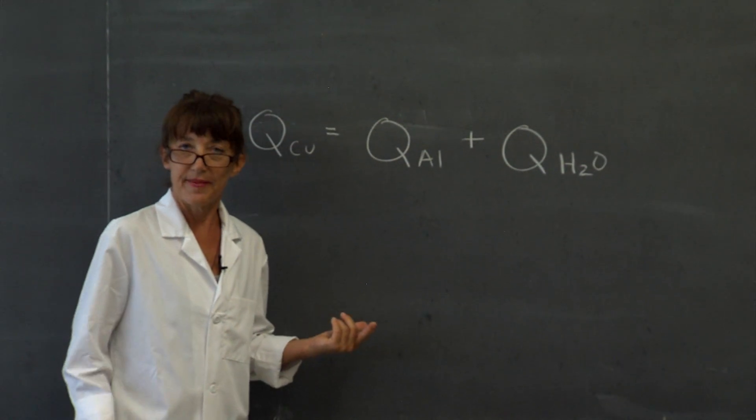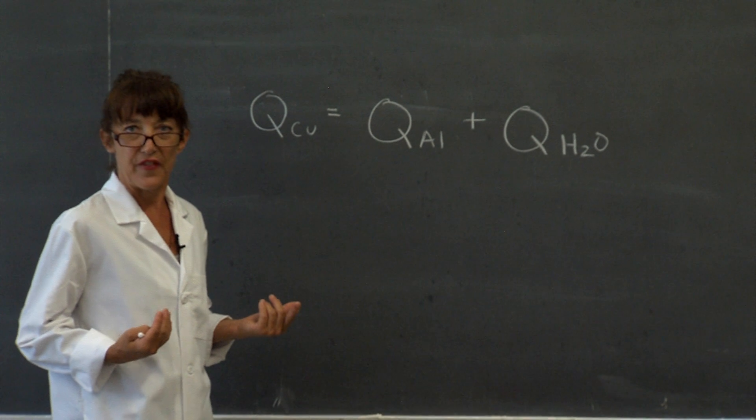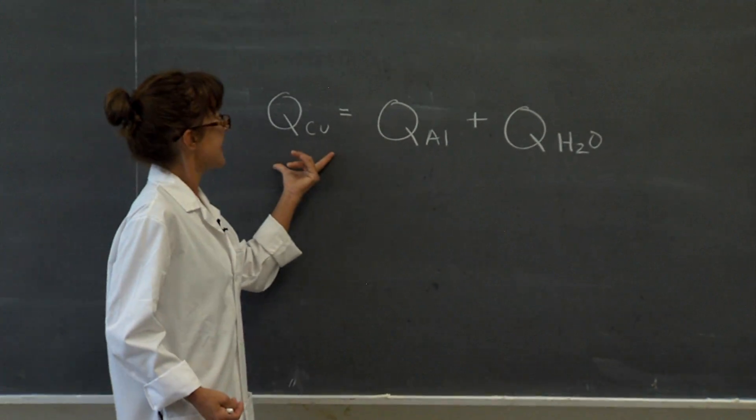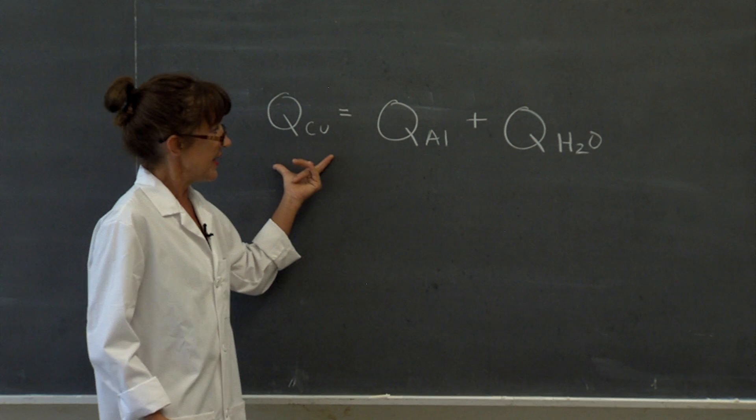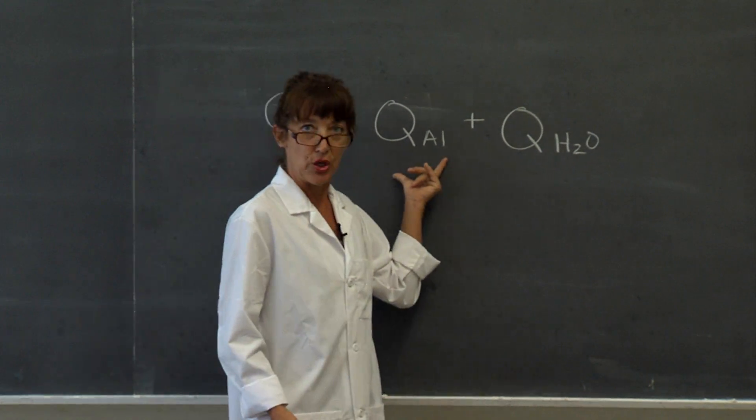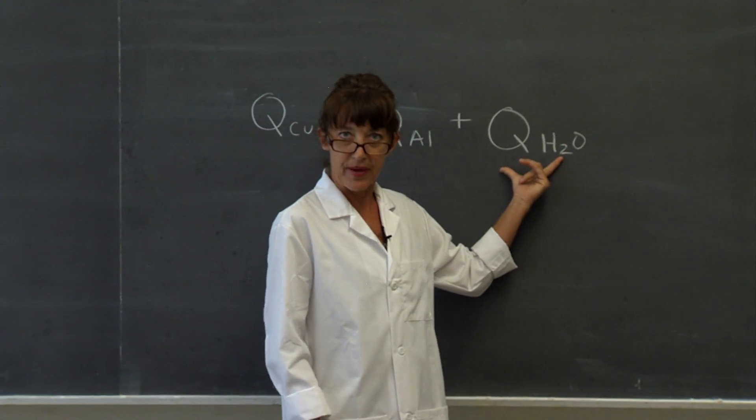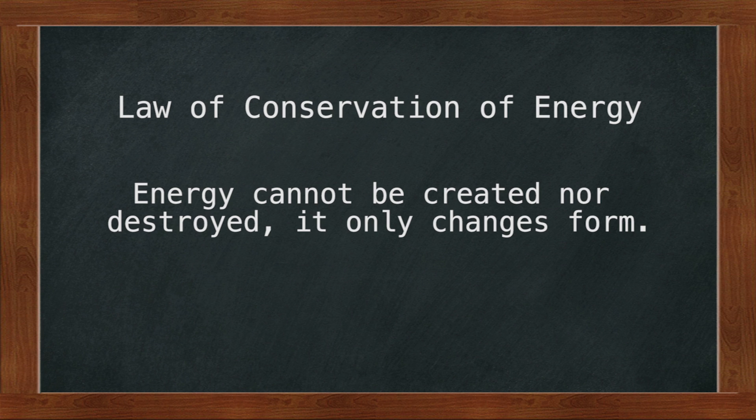How does our experiment work? The experiment works with the conservation of thermal energy. It states that the energy lost by the copper is equal to the energy gained by the aluminum, plus the energy gained by the water. According to the law of conservation of energy, energy cannot be created nor destroyed. It only changes form. The problem here lies in the fact that we have no way to directly measure thermal energy.